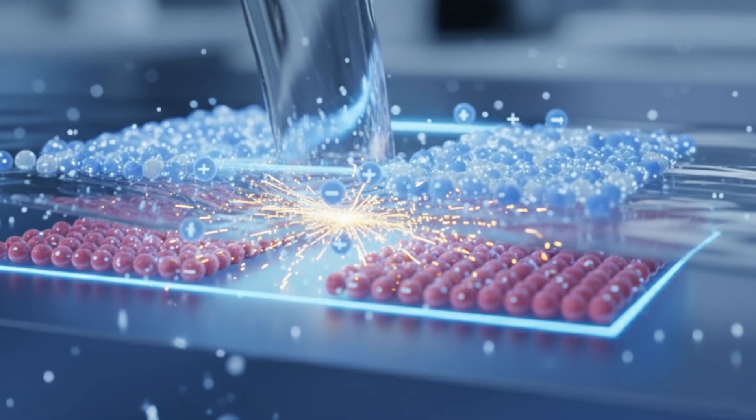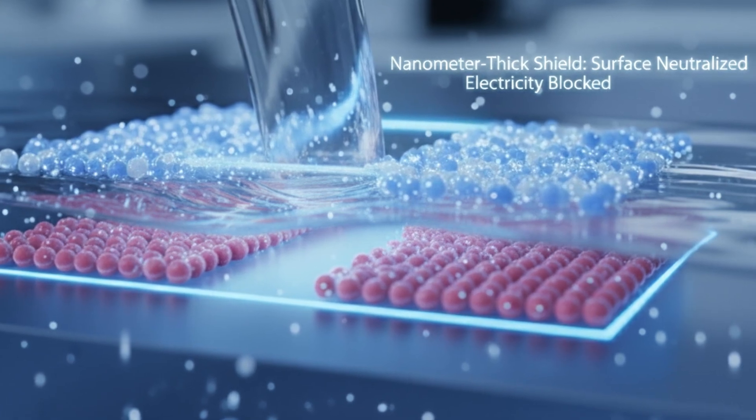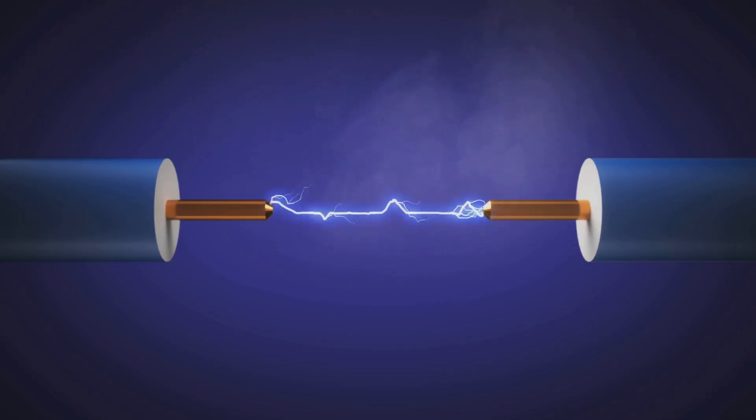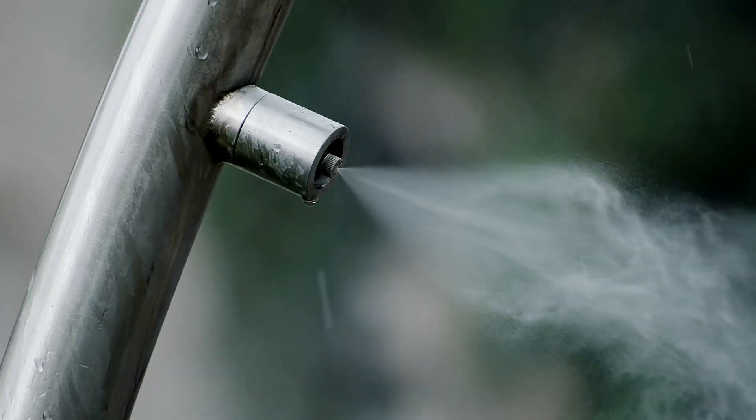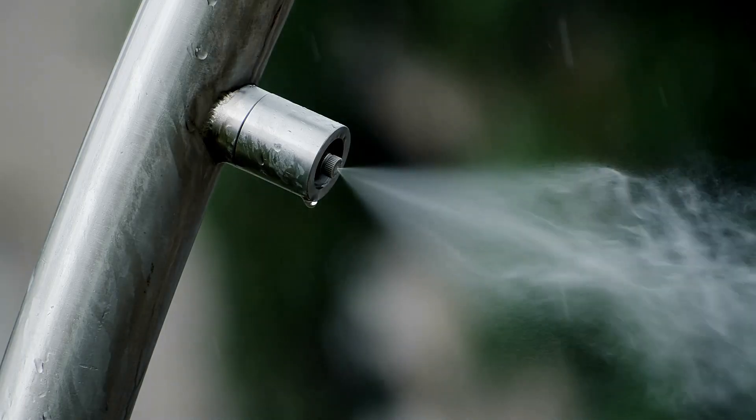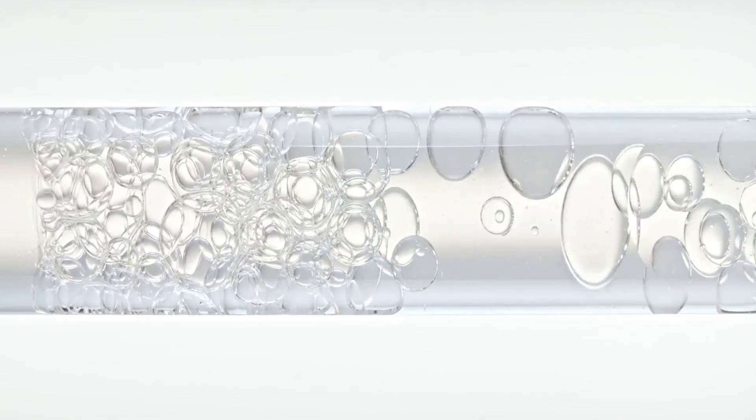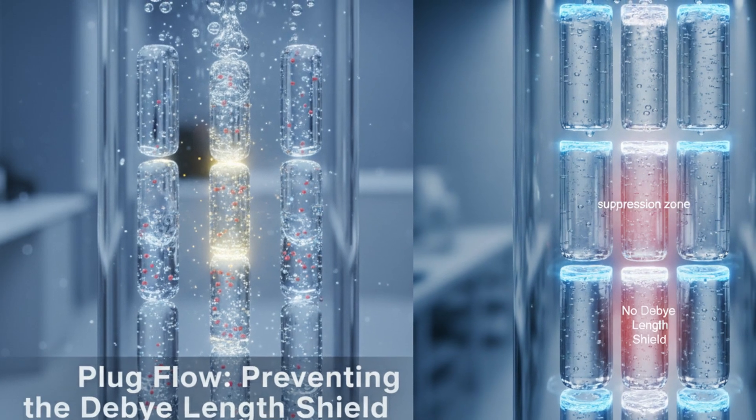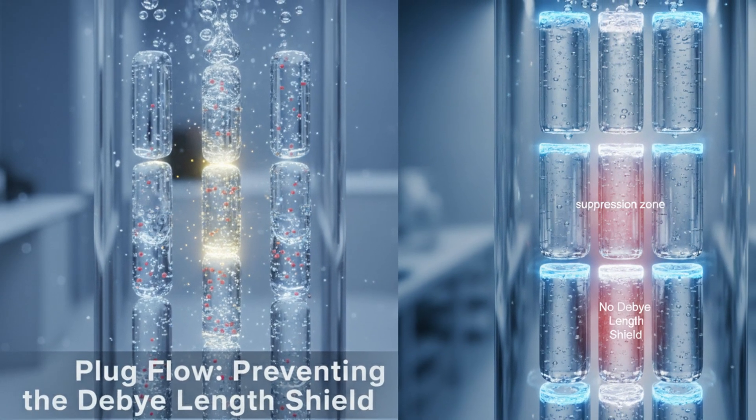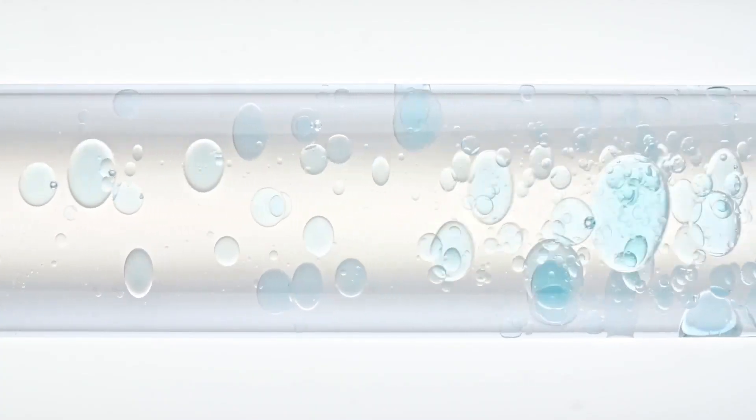For decades, scientists knew that when water flows continuously over a surface, a microscopic shield of opposite charges forms right at the interface. This shield, just nanometers thick, effectively neutralizes the surface and stops any significant amount of electricity from being generated. The team's solution was elegantly simple. Instead of a continuous stream, they designed a narrow, 2mm wide tube. As droplets fall inside, they merge and trap small pockets of air, creating a unique pattern of separated water columns called plug flow. This is the genius of it. The air gaps between the water plugs prevent that charge-killing Debye length shield from ever fully forming. This allows for a massive and continuous separation of electrical charges as the plugs slide down the tube.